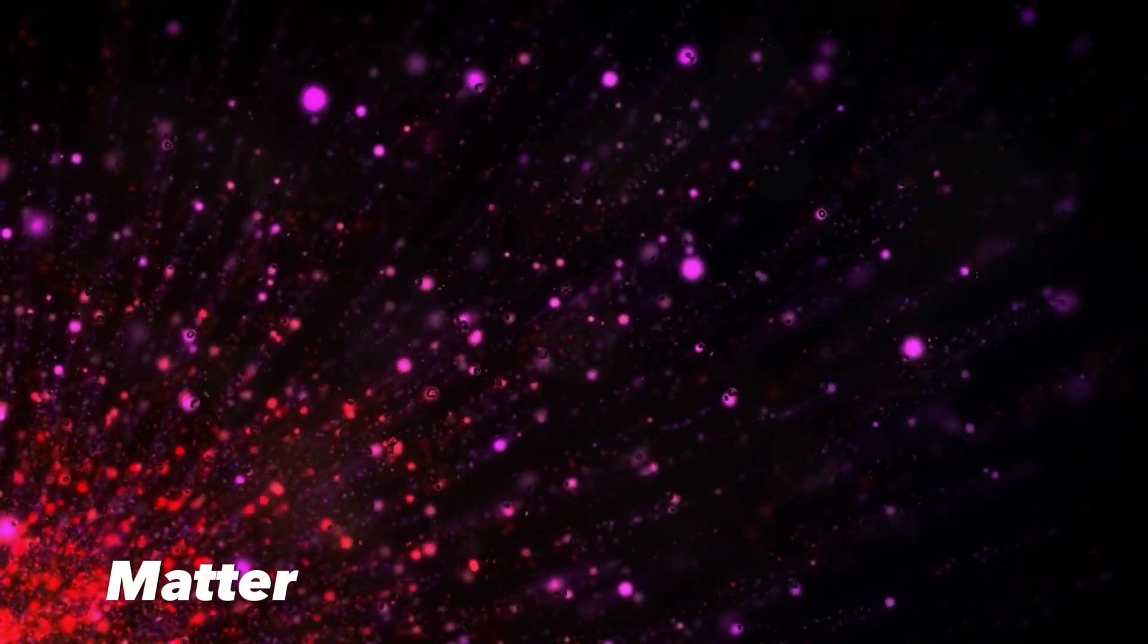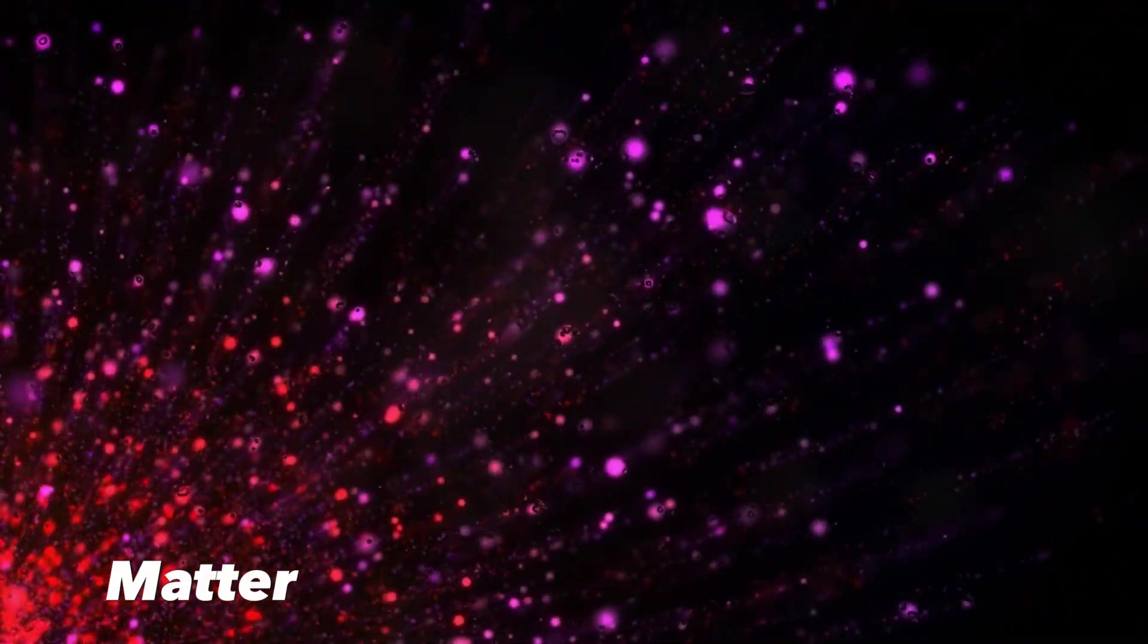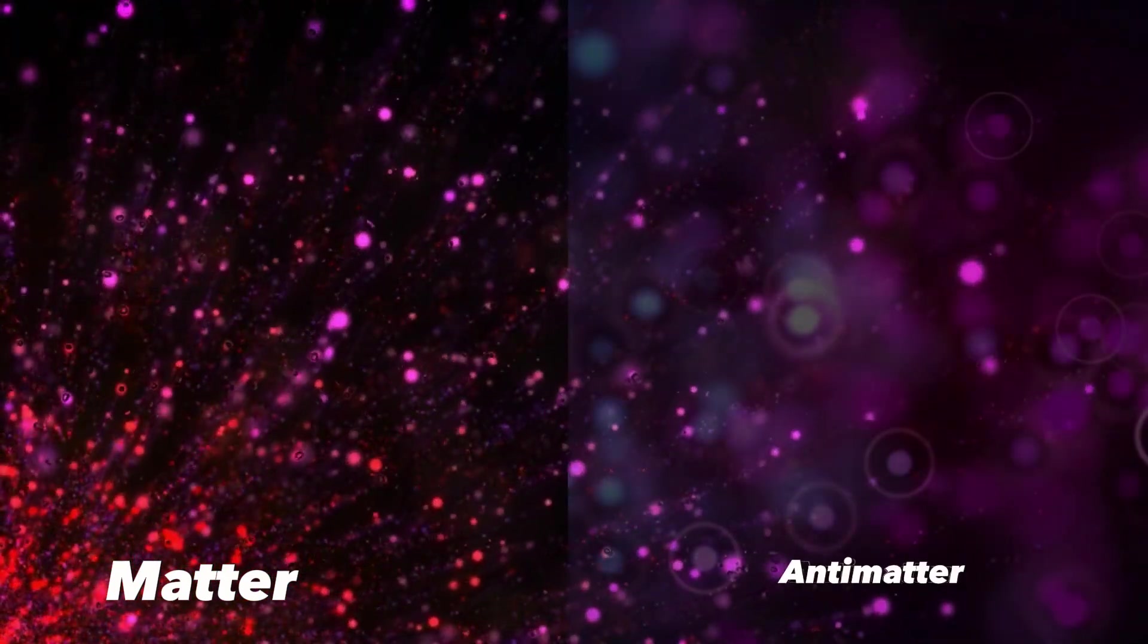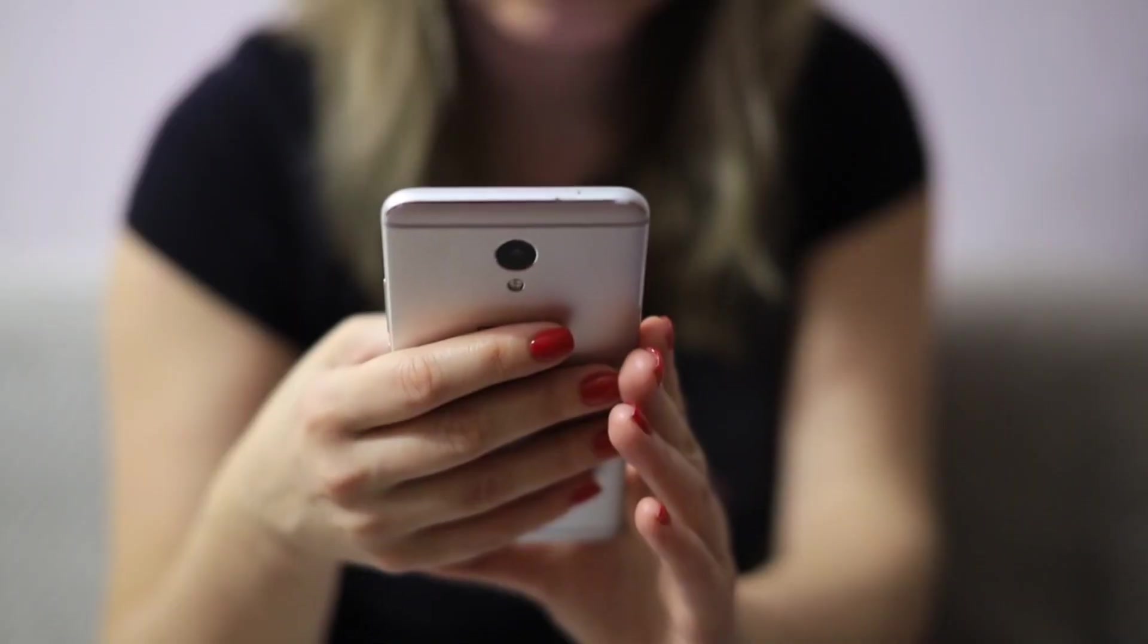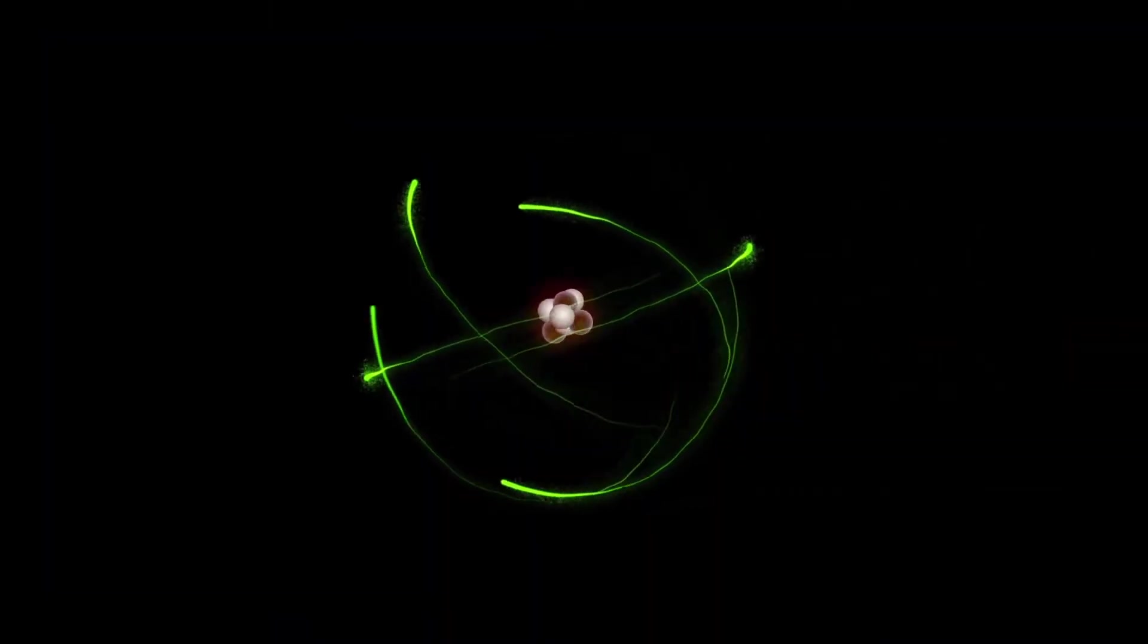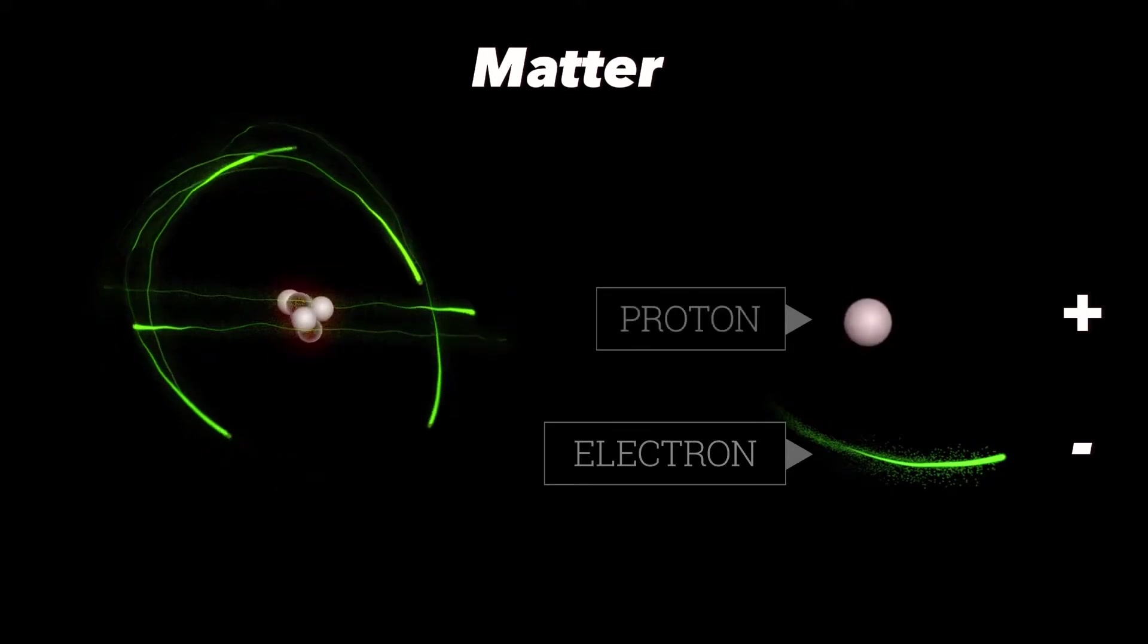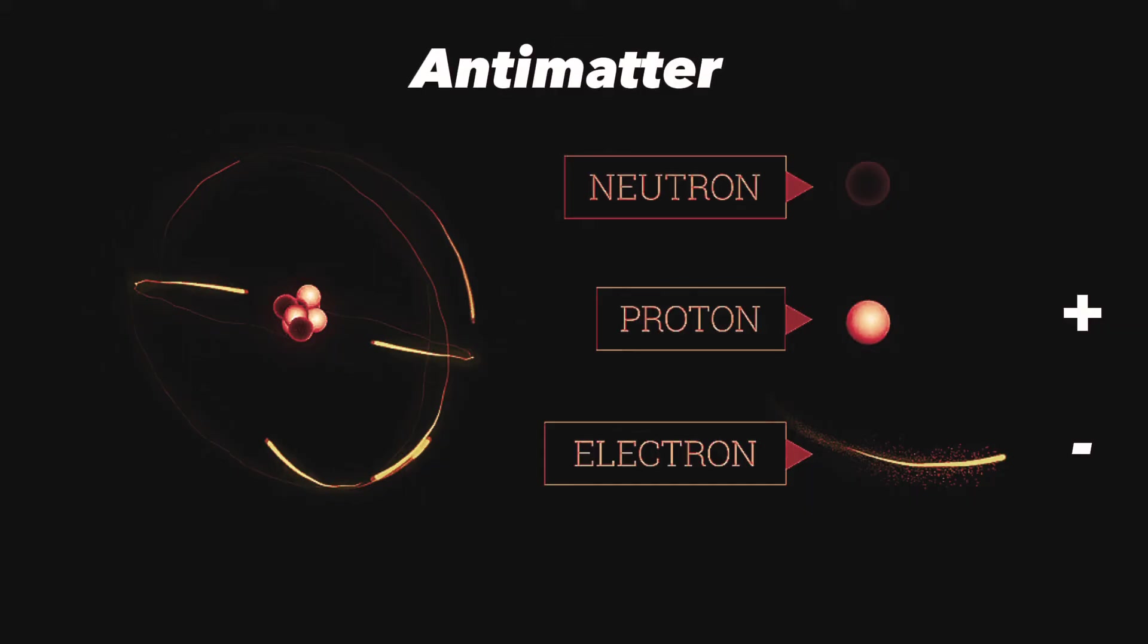Many theories in particle physics suggest that for all the matter created at the universe's conception, an equal amount of antimatter should have been created alongside it. Everything is made up of normal matter composed of atoms built with positive protons and negative electrons, whereas antimatter is composed of atoms with negative protons and positive electrons. When pieces of matter and antimatter collide, they annihilate each other in a powerful explosion, leaving behind only energy.